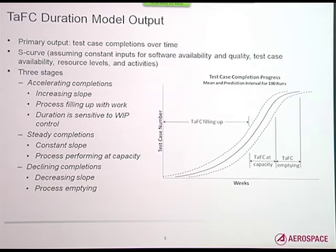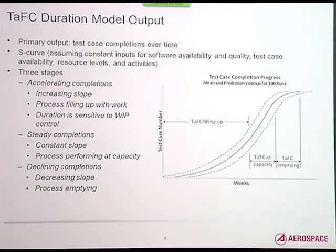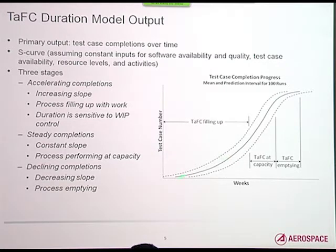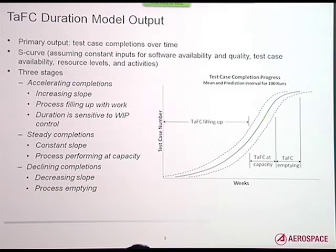When we look at the output of these models, we're generally looking for the completion of test cases — when are they finally running? We'll plot that and ordinarily see three regions: first, a curve as the process fills up and reaches capacity for processing test cases, then a straight line with steady output, and finally a fold-over as we pull the last test cases out of the process.